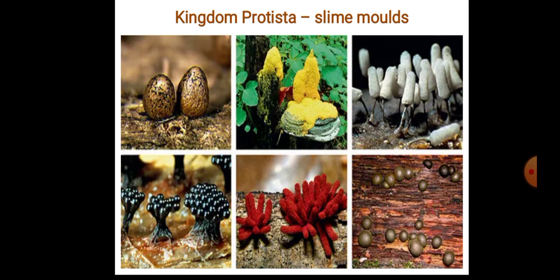During unfavorable conditions, the plasmodium differentiates and forms fruiting bodies bearing spores at their tips. In the picture you can see those fruiting bodies in different colors. The spores possess true walls. They are extremely resistant and survive for many years, even under adverse conditions. The spores are dispersed by air currents.